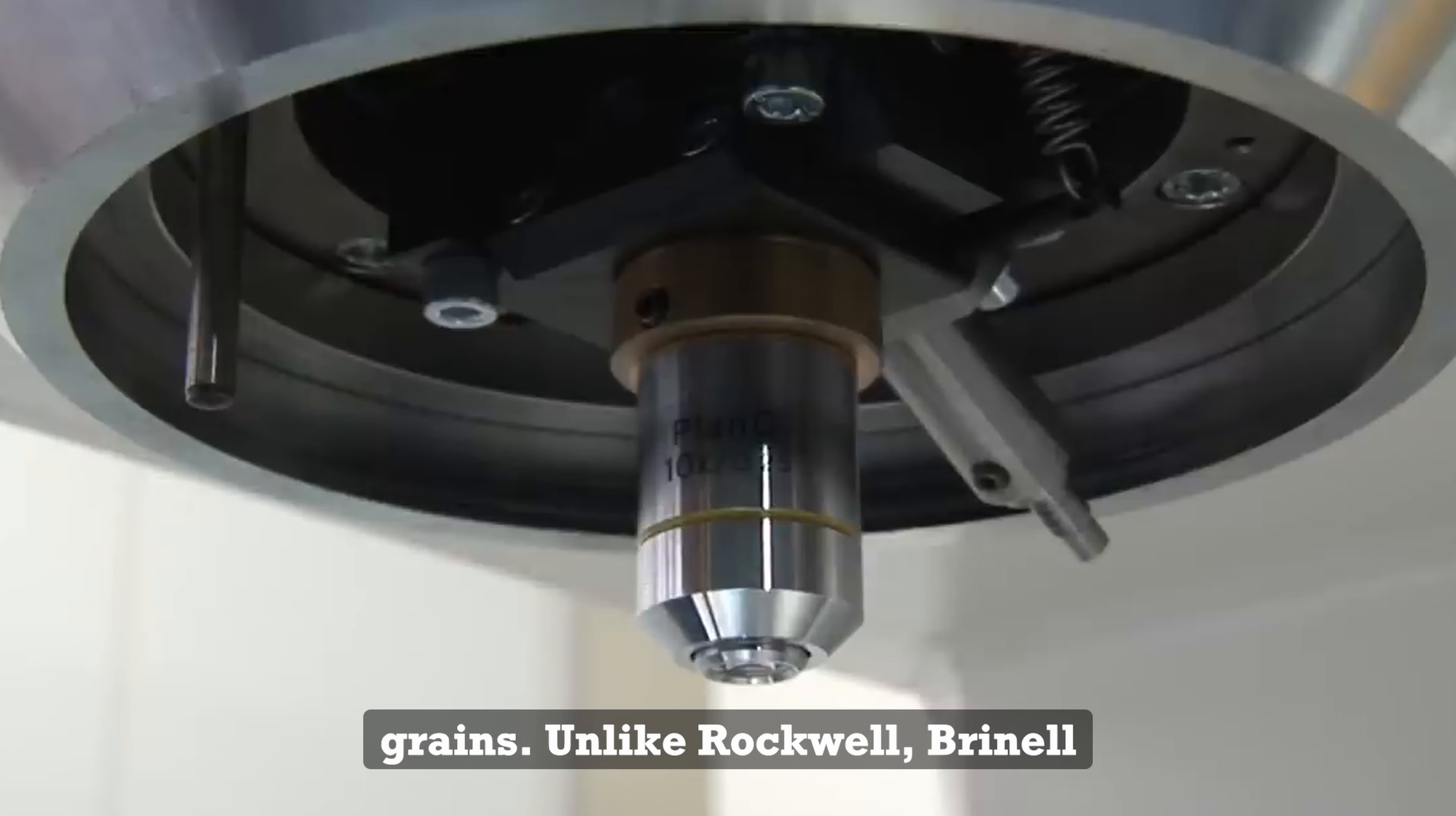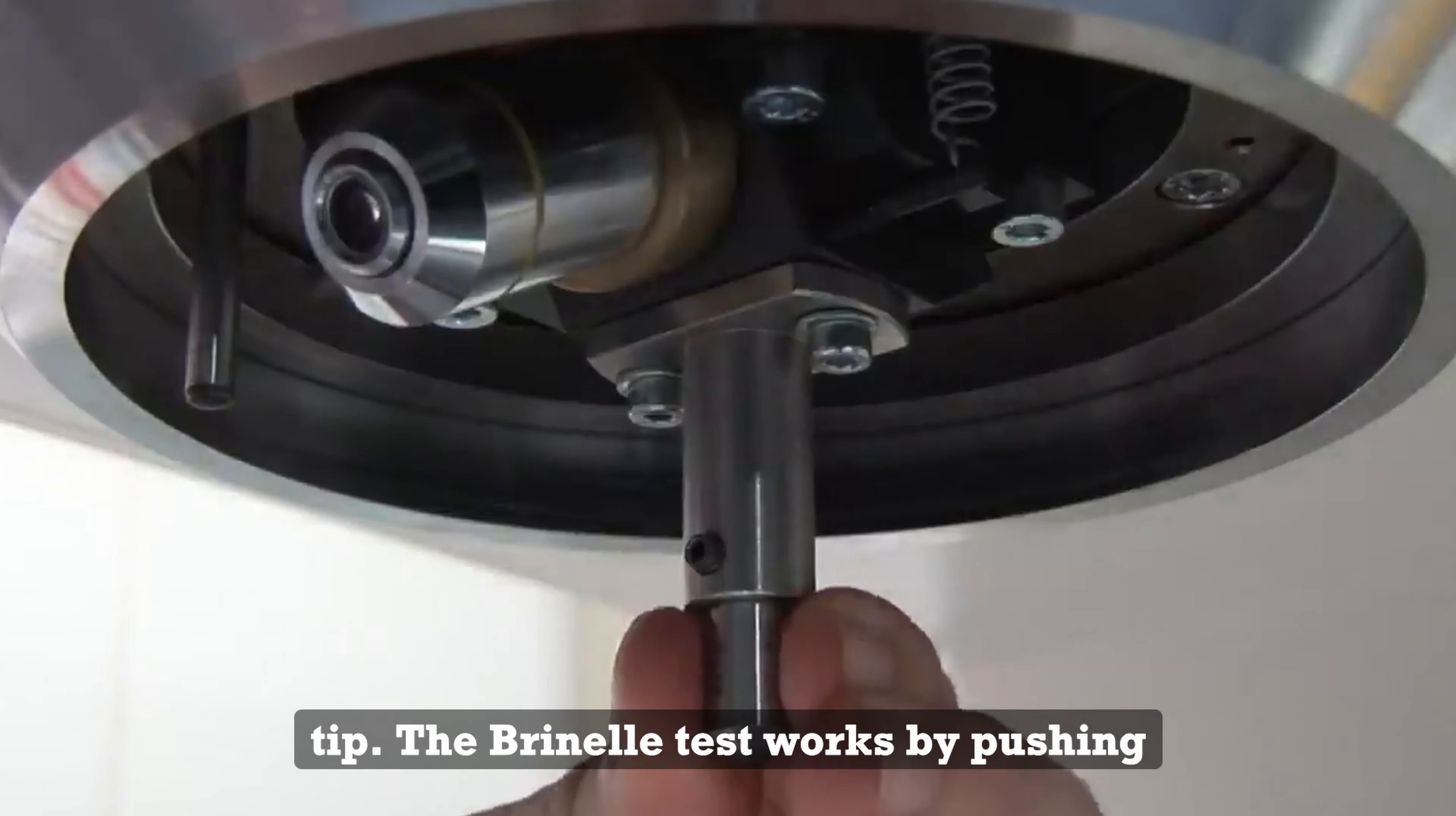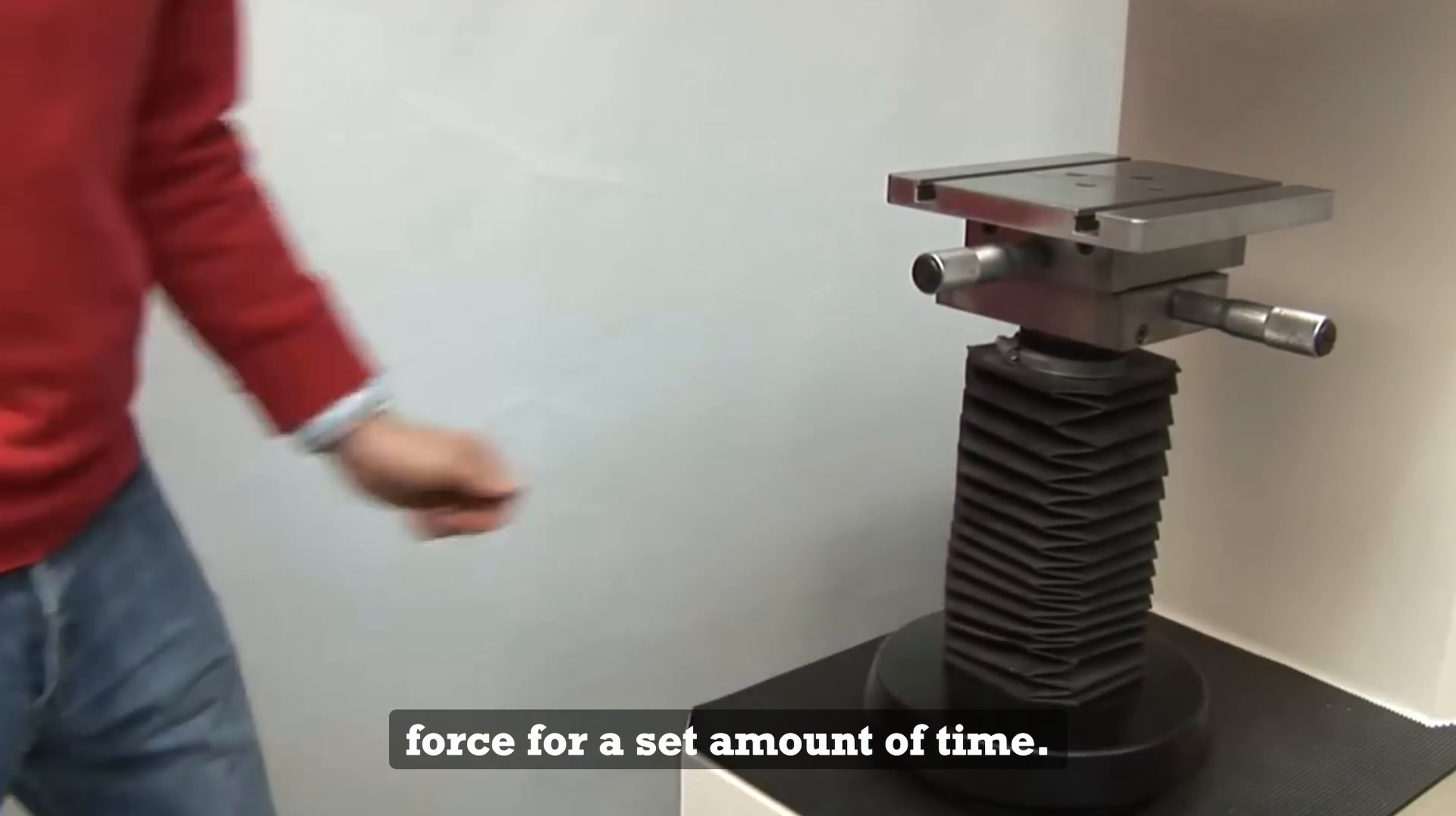Unlike Rockwell, Brinell uses a hardened steel or tungsten carbide ball as an indenter instead of a diamond tip. The Brinell test works by pushing this ball into the material with a high force for a set amount of time.